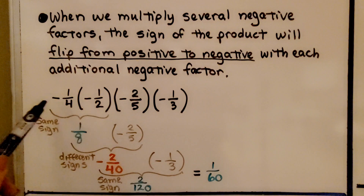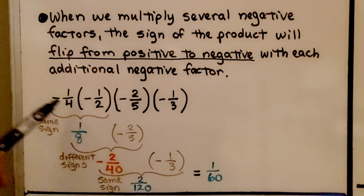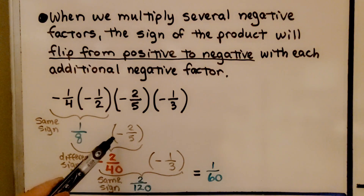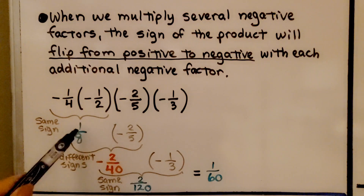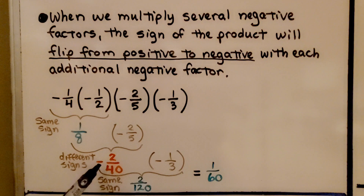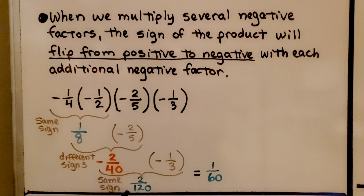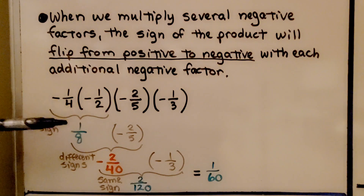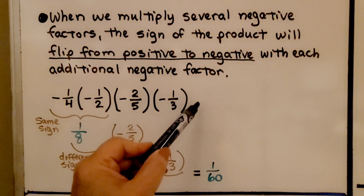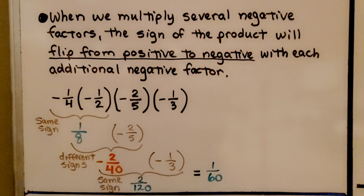Here we have four negative factors, and the first two have the same sign, so when we multiply them our partial product is one-eighth. Now we multiply that by negative two-fifths — positive times negative gives a negative product. Now we have a negative times a negative, same sign, so we get a positive product. We can see it went from positive to negative to positive. If we multiplied another negative factor, it would switch back to negative again.